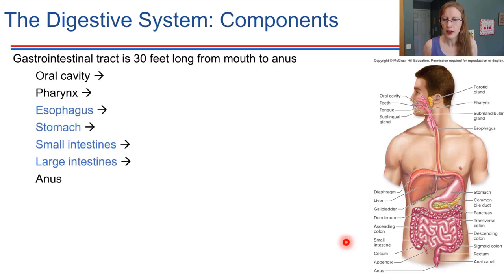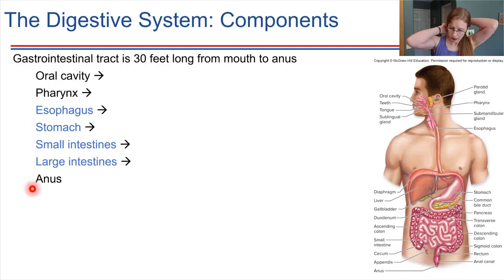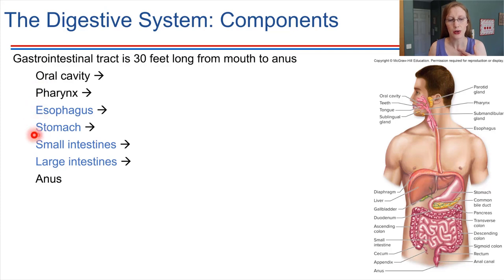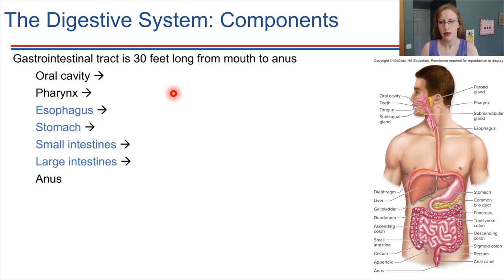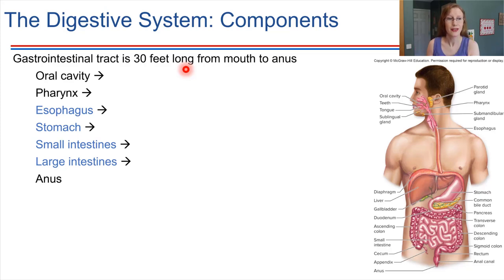Major components of the digestive system start at the mouth — the oral cavity. From the mouth, food goes to the pharynx in the throat area, then the esophagus leads to the stomach, which leads to the intestines, and finally the anus is where undigested materials leave the body. In total, this gastrointestinal tract is about 30 feet long in a living person — significantly longer in a cadaver due to muscle relaxation. It has to be that long to give us time to digest food and absorb what we need from it.